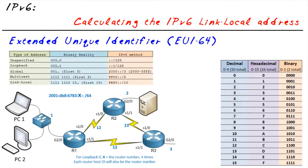Our objective for this nugget is simple. We want to, first of all, identify what the heck is a link local address, and then secondly, how do we calculate — or how does the IOS router calculate — what its link local address is going to be?